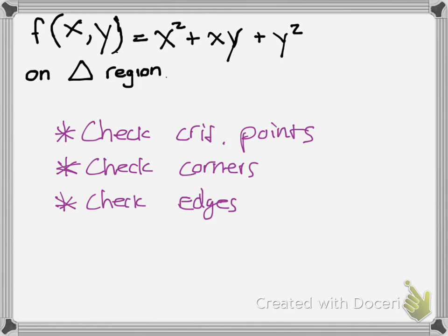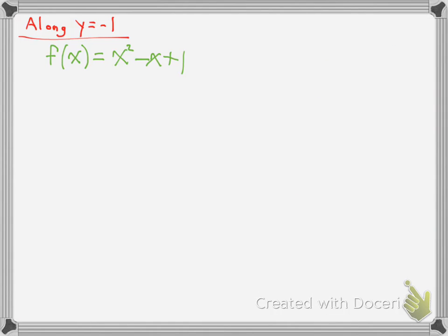So you'd have x squared minus x plus 1. Just to confirm, we're plugging it into this equation here. If we want to find the critical points, if you notice that this is a parabola, you can calculate the vertex, or if you want to go the old-fashioned calculus way, you take the derivative. So f prime would be 2x minus 1. Set that equal to 0, and you would get x equal to 1 half.